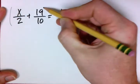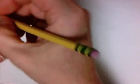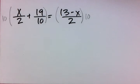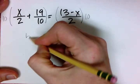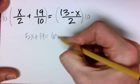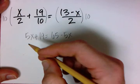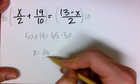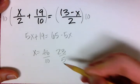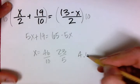First, we get rid of the fractions by multiplying the entire equation by the least common denominator, which is 10. When we solve, we get 5x plus 19 equals 65 minus 5x. Solving for x gives us 46 over 10, which reduces to 23 over 5, and when converted back to a decimal, that gives us 4.6.